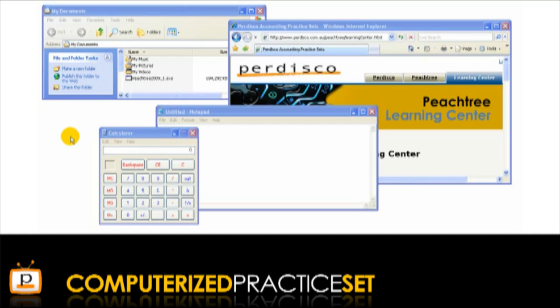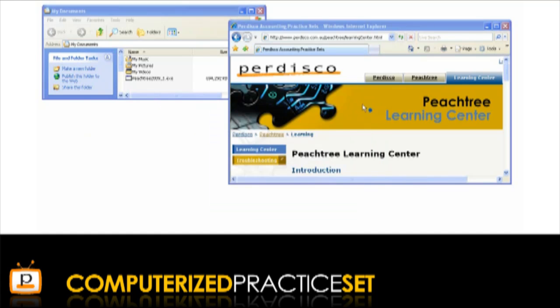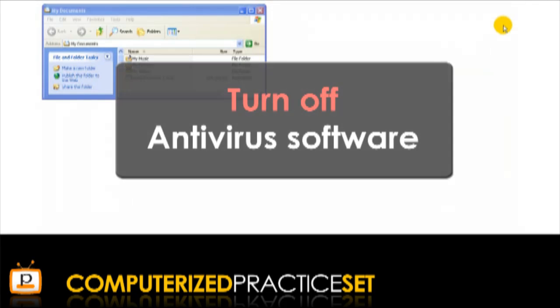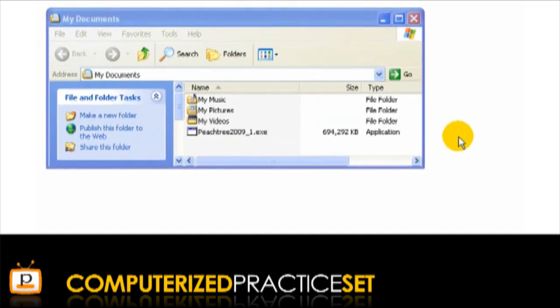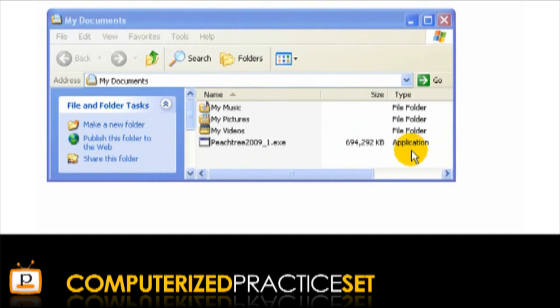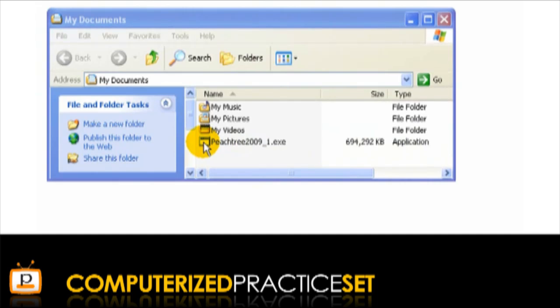To begin installing Peachtree, you should first close any other applications you have running on your computer. During the installation process, you are also required to turn off all of your antivirus software. Since this process is different depending on the exact antivirus software you have, we will not detail this process here. Once your antivirus software is turned off, you need to locate the Peachtree file you downloaded from Pedisco.